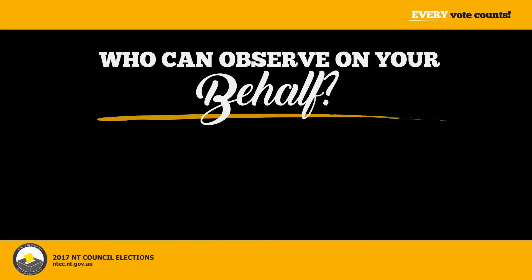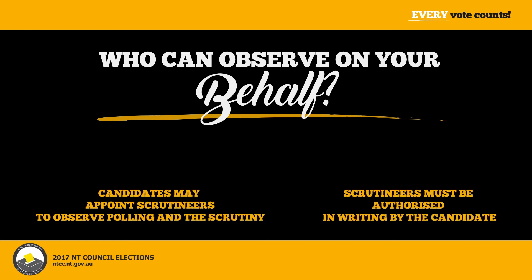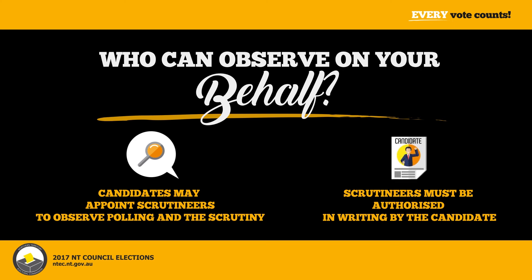Who can observe on your behalf? Scrutineers: Candidates may appoint a scrutineer to represent them and observe polling and scrutinies. Scrutineers must be authorised by you, the candidate, to undertake this task. A scrutineer appointment form must be completed and handed to the OIC of the Voting or Scrutineering Centre.